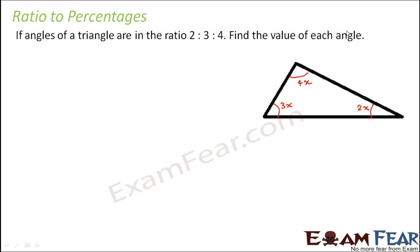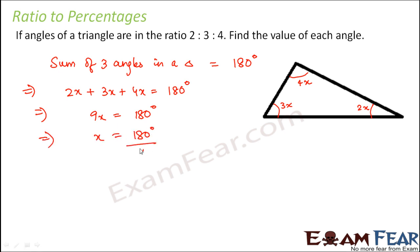So you have to find out the value of each angle. Now we already know that sum of three angles of a triangle is always equal to how much? So we have already learnt this in our previous lesson. So the sum of the three angles is always equal to 180 degrees. So therefore we can say that 2x plus 3x plus 4x is equal to 180 degree. So 2 plus 3 plus 4 is 9. So 9x is equal to 180 degrees or we can say x is equal to 180 degree divided by 9. So x will be equal to 20 degree.